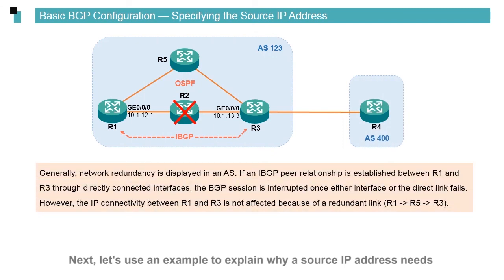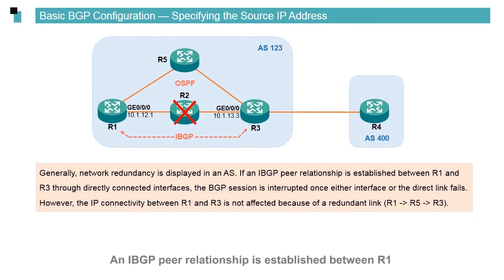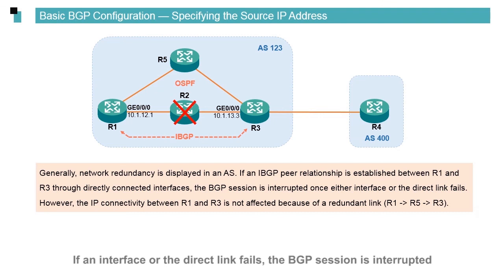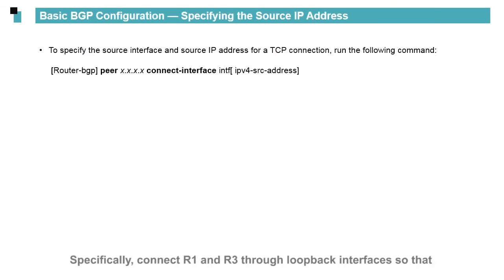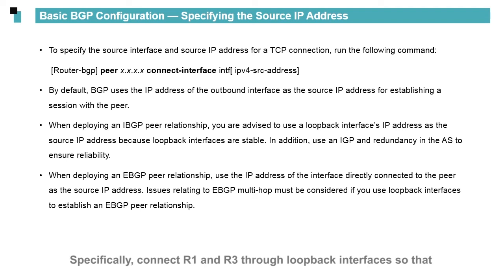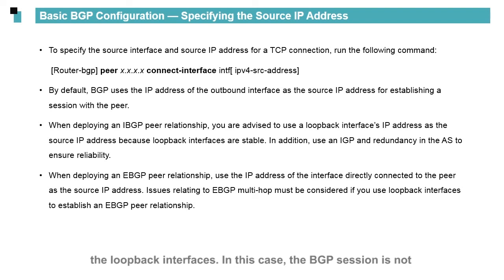Next, let's explain why a source IP address needs to be specified. In the figure, R1, R2, R3, and R5 are in the same AS. An IBGP peer relationship is established between R1 and R3 through directly connected interfaces. If an interface or the direct link fails, the BGP session is interrupted. However, the IP connectivity between R1 and R3 will remain unaffected because of a redundant link via R1-R5-R3. To address this, you need to specify the source IP address — connect R1 and R3 through loopback interfaces so that the BGP peer relationship is established through loopback interfaces. In this case, the BGP session is not interrupted even if the direct link between them fails.